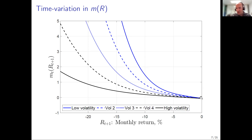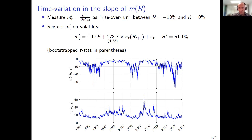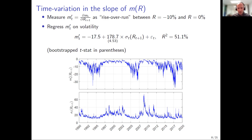The slope (measured between minus 10% and zero) is plotted on top; the VIX index is plotted on the bottom. They are fairly highly correlated: regressing the slope on the VIX gives an R² of 51% with a highly significant slope — bootstrapped to account for overlapping data. The result is not driven by outliers: 2008, for example, doesn't look all that different from a large part of the subsequent sample. High volatility means the pricing kernel slope is close to zero, and this is not at all unusual in the data.